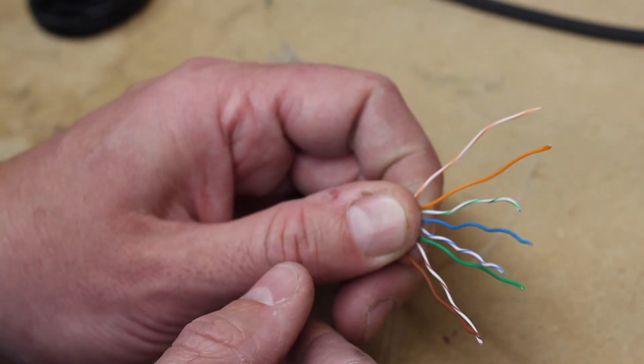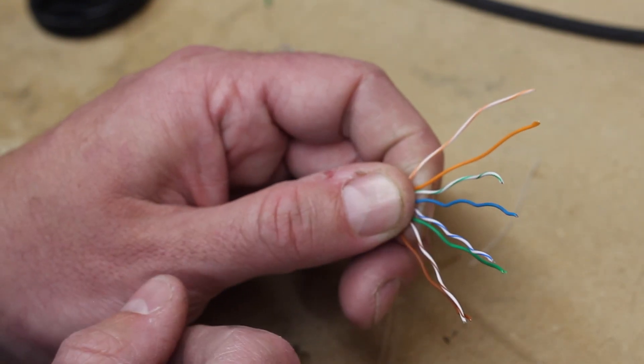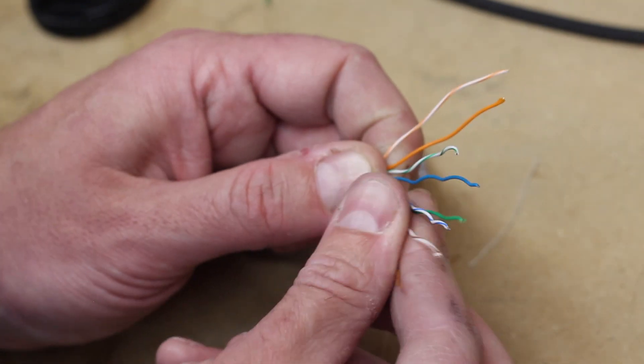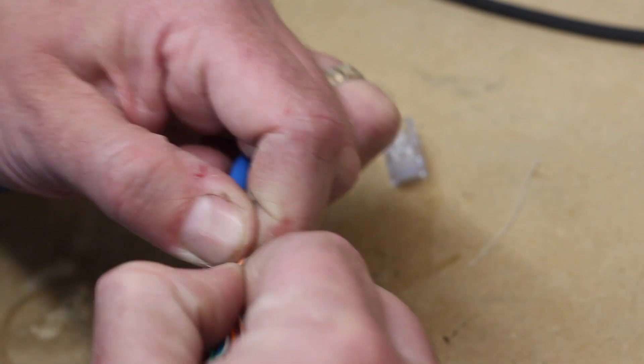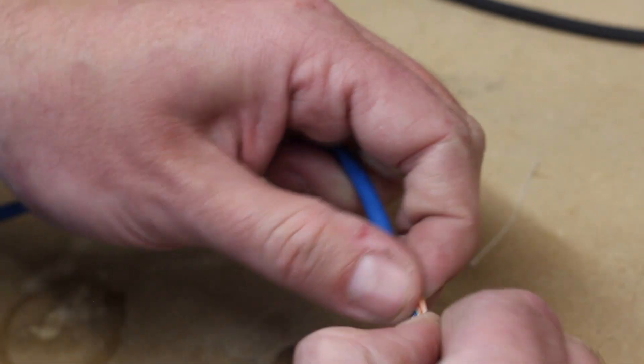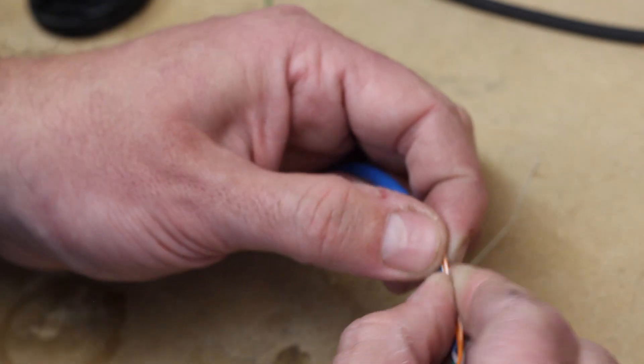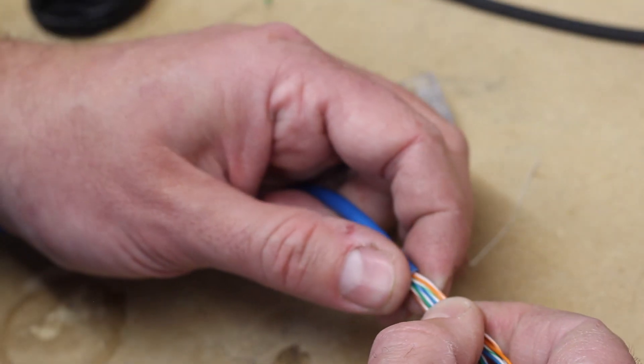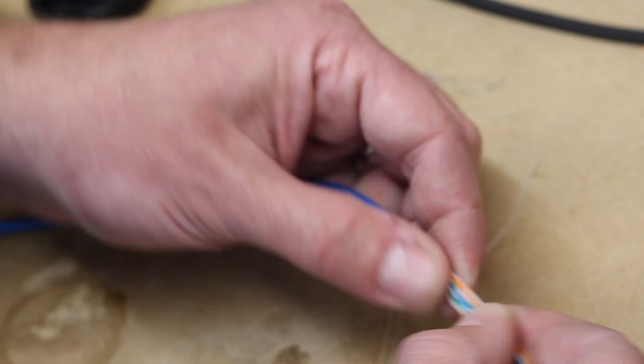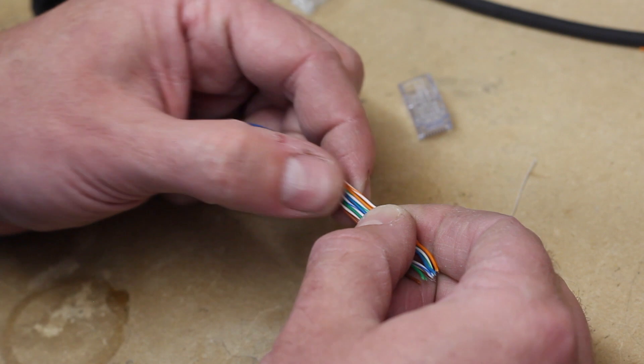Once you get them all like that, sandwiched in a single layer between your thumb and index finger, then you can start to pull them together. It's hard to describe this motion, but you do a little wiggly wiggly and you soon produce a nice perfectly flat arrangement of conductors. Just like that. You can verify your color code now. You've got all kinds of room to work in.